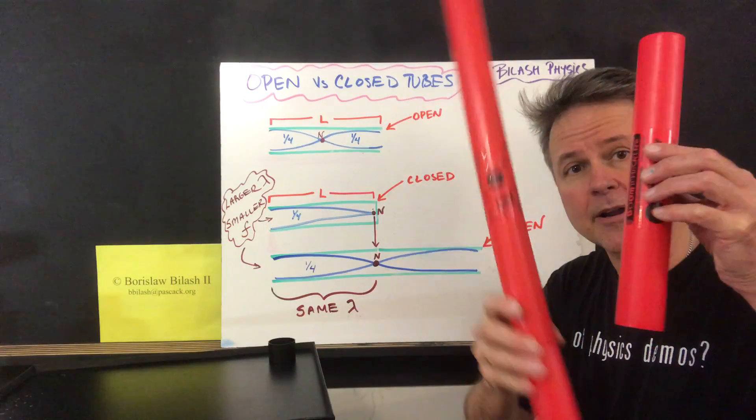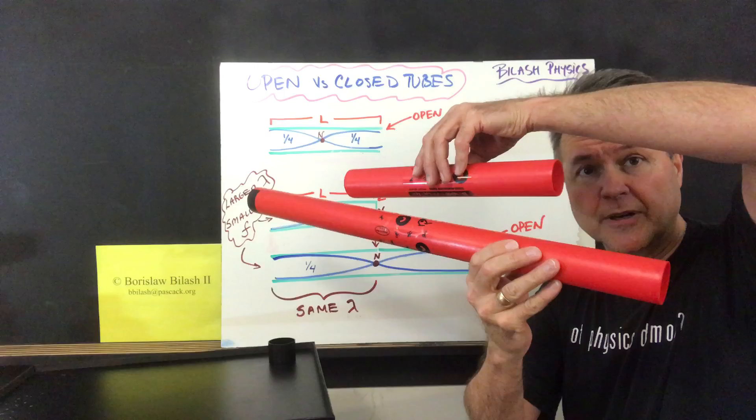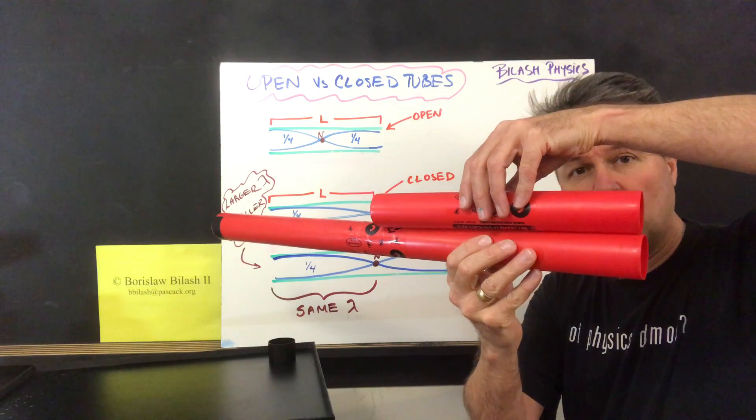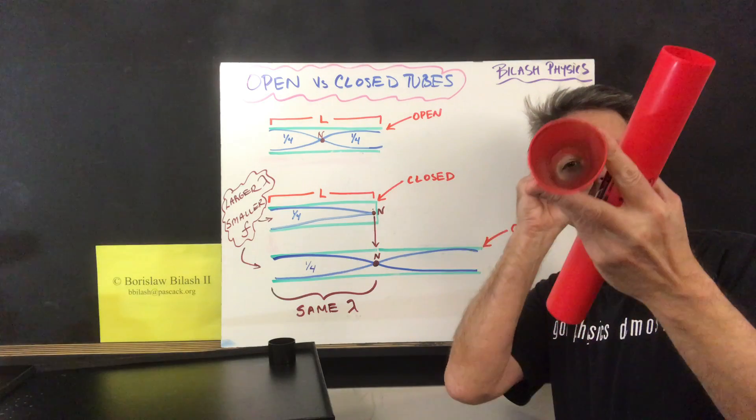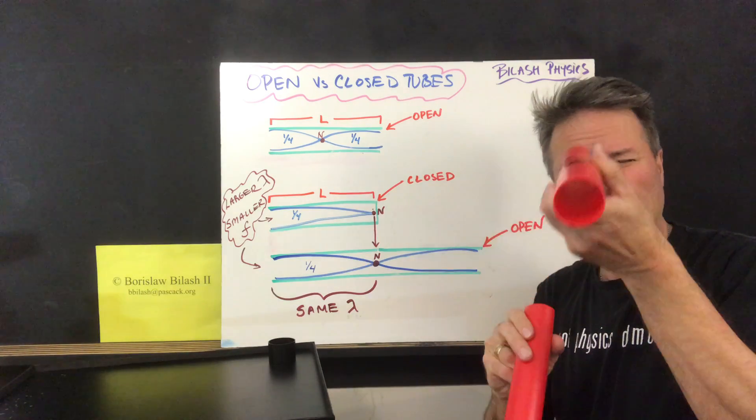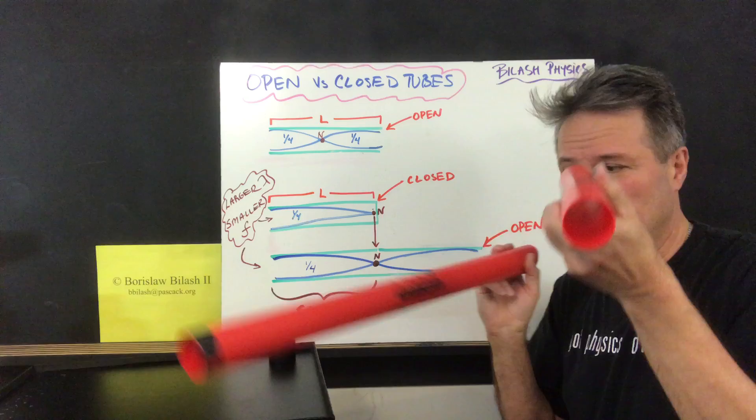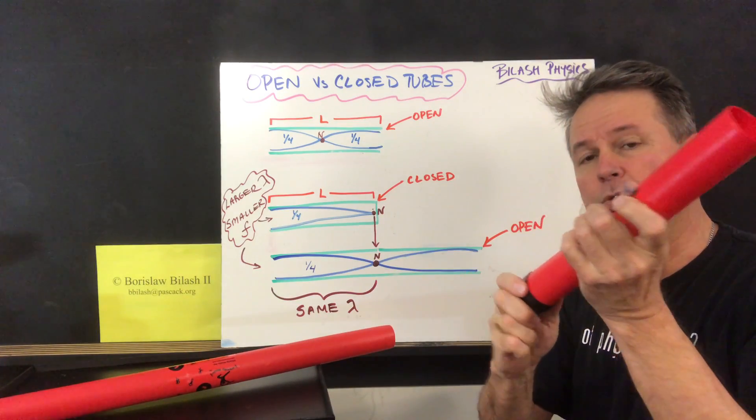We can compare these two tubes here. We see that the smaller tube is exactly half of the larger tube. Now the larger tube is open, and right now I have the small tube open, but I'm going to add a cap to the smaller tube.